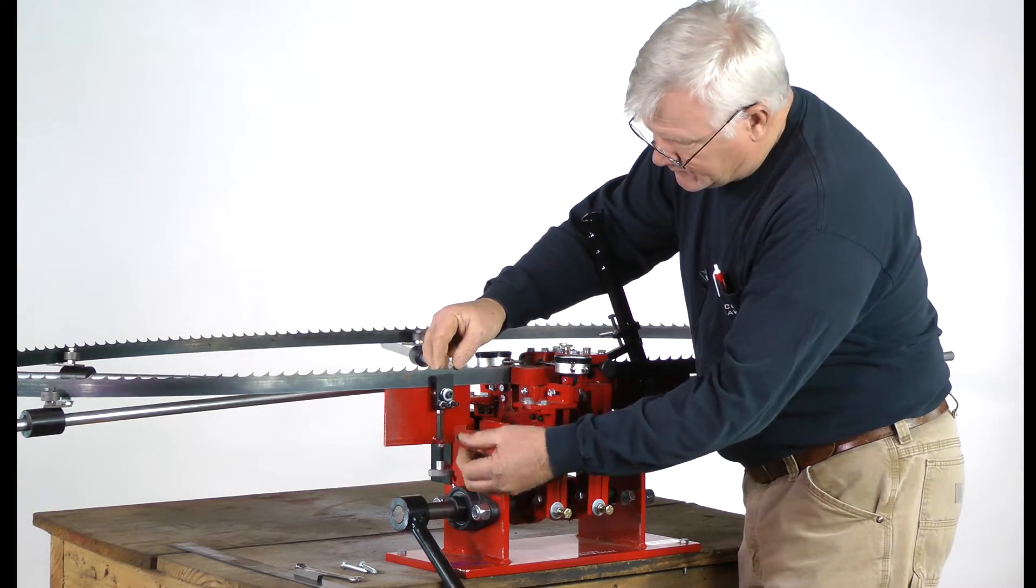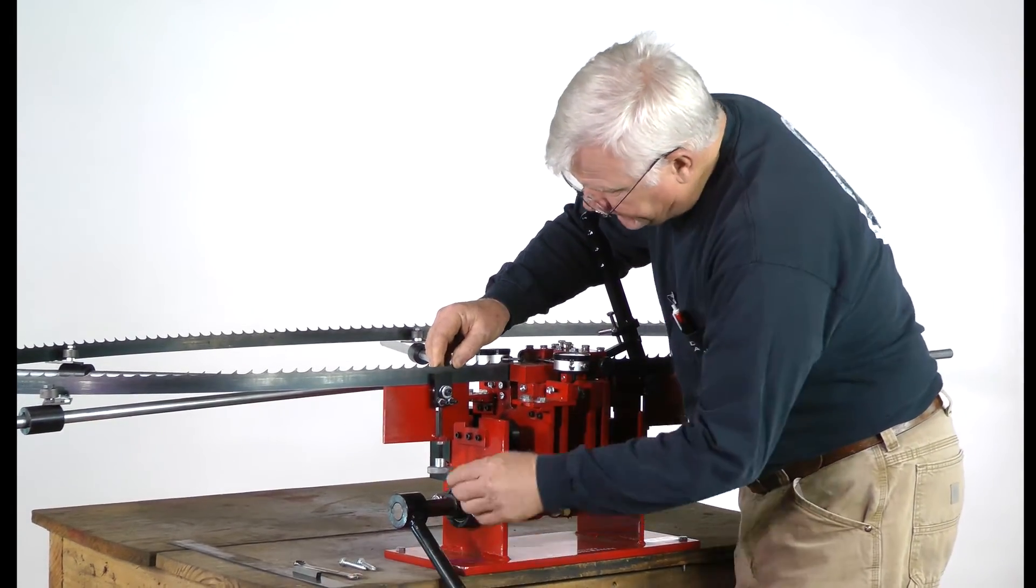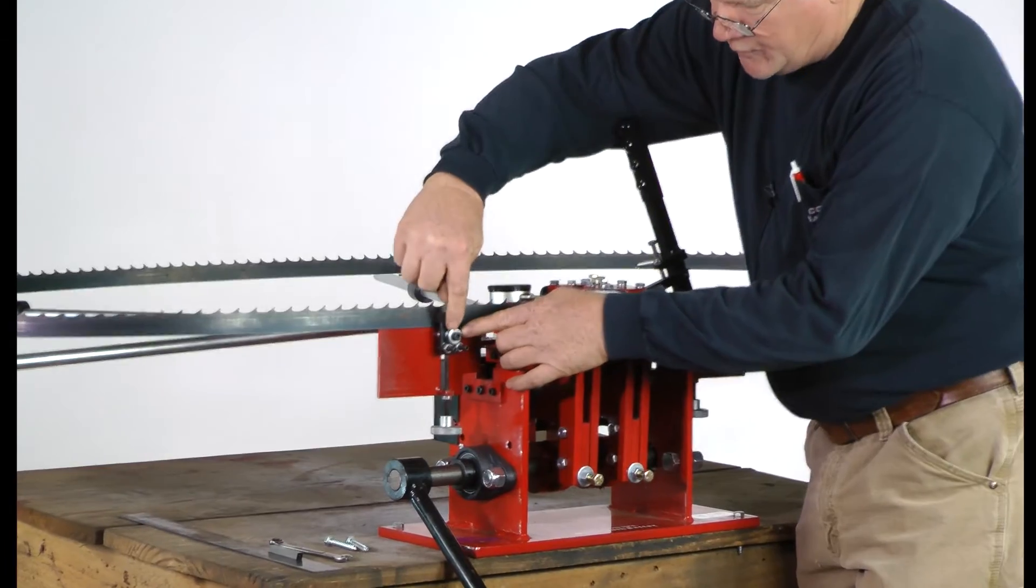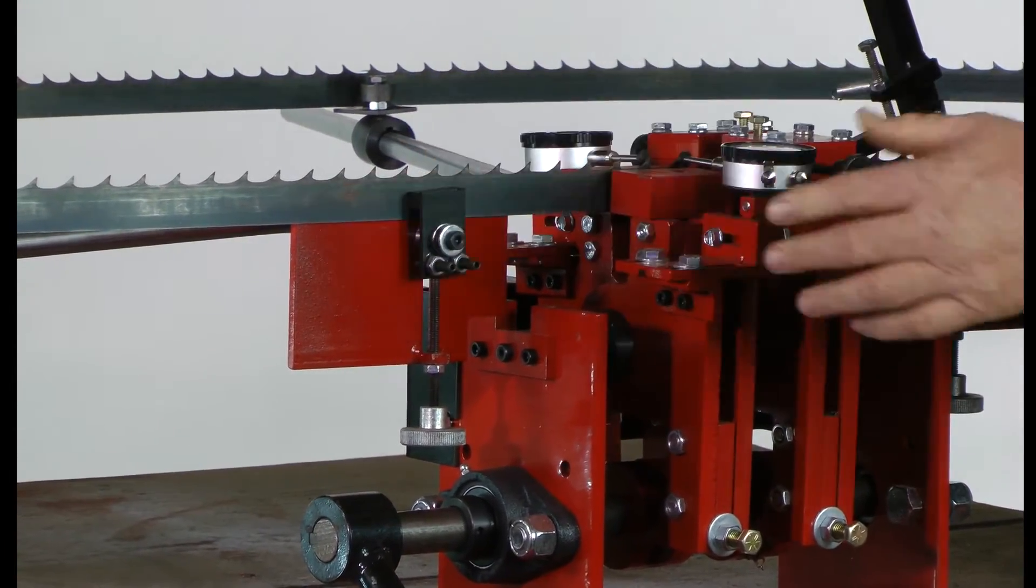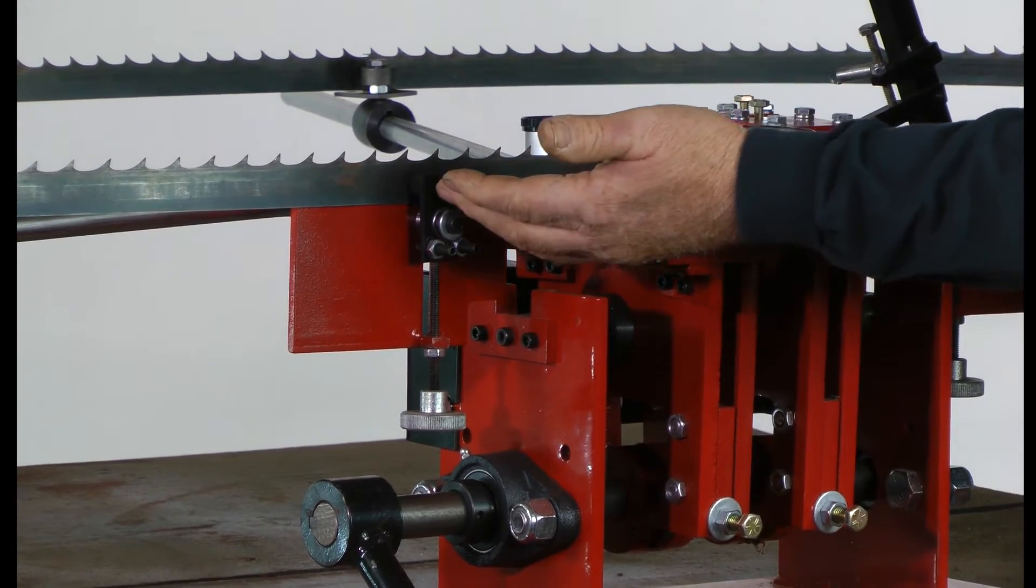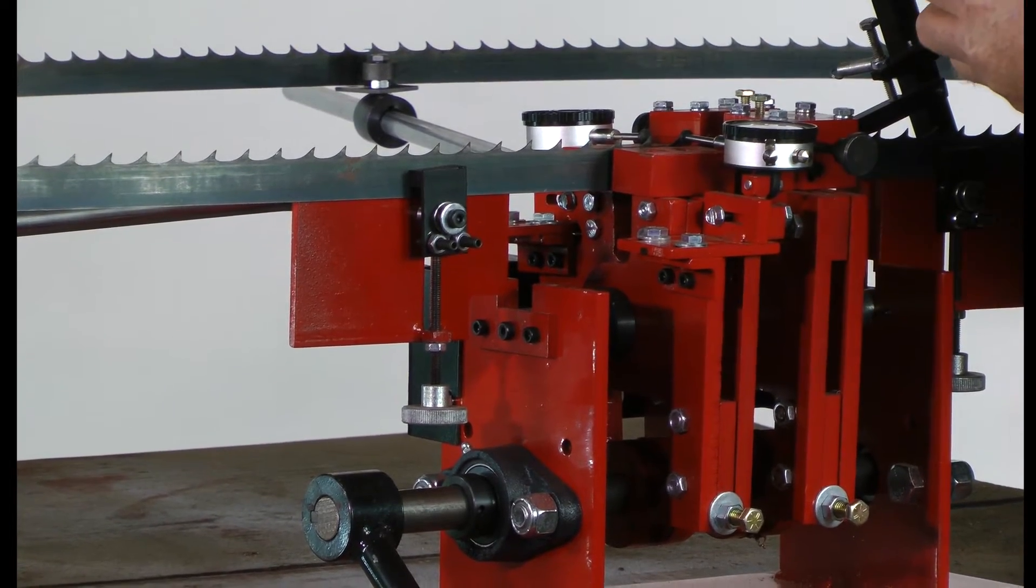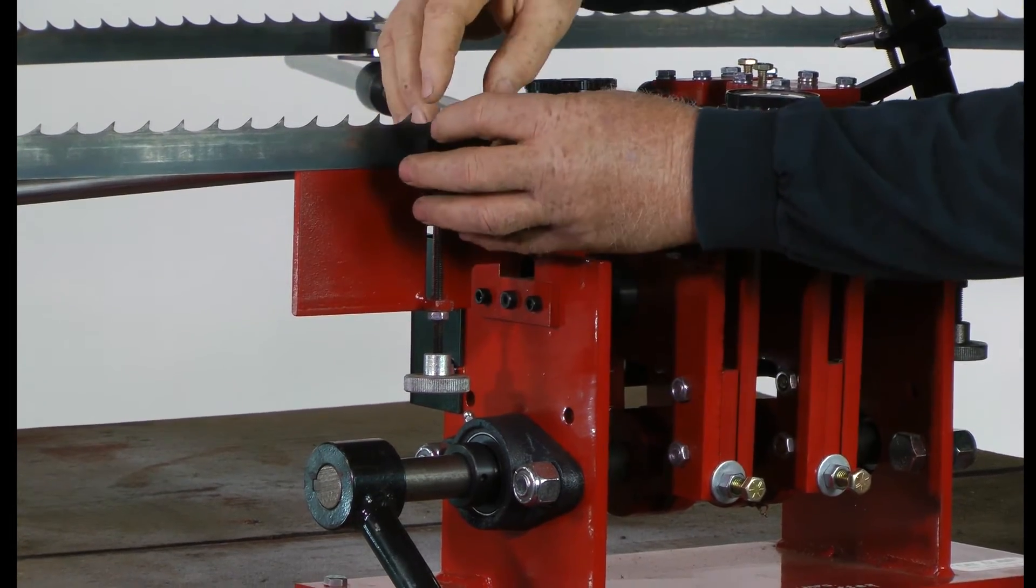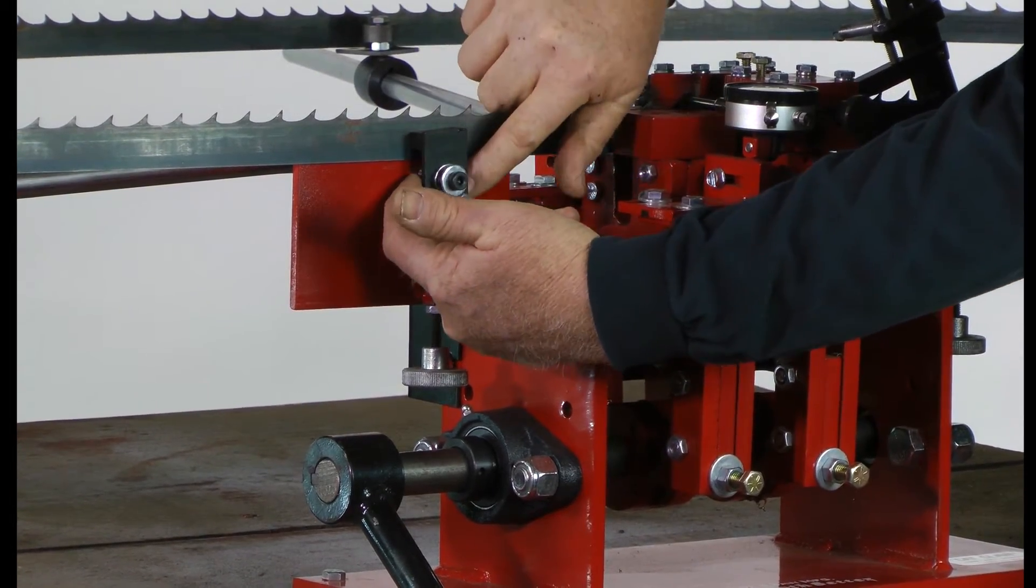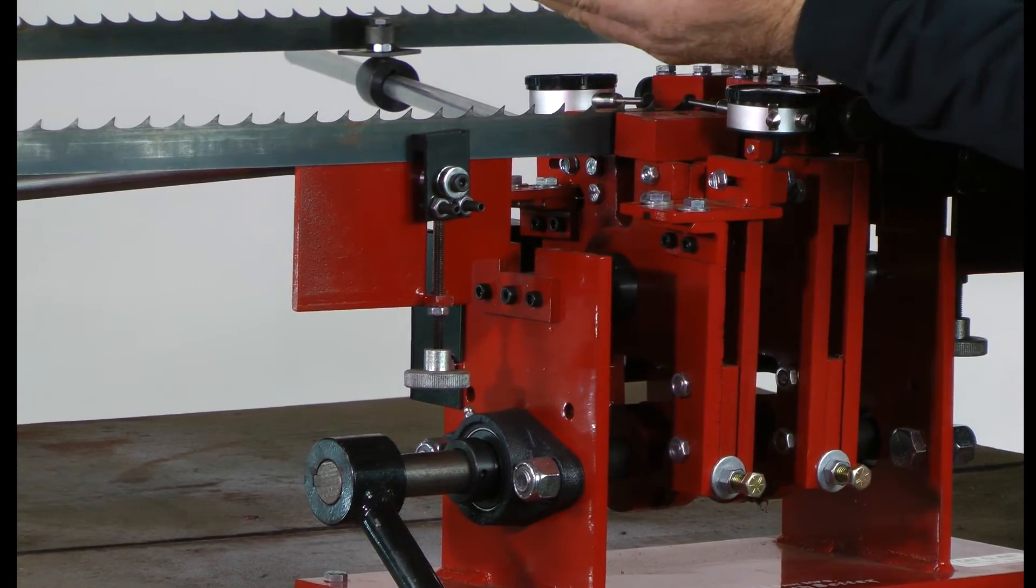Our clamping system here is unique and what it's got is a spring on the outside. We've got a bar that clamps and holds the blade in place. When I release my handle, I don't want my blade to slip back with my handle. And then we've got adjustments on here so you can adjust the clamping. There's a bearing inside of here that the back of the blade rolls on.